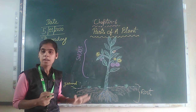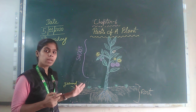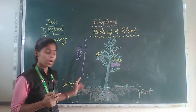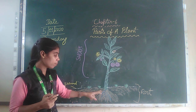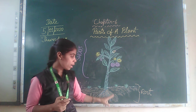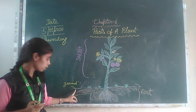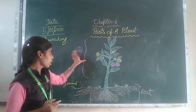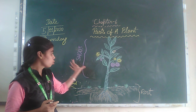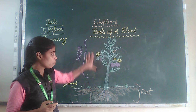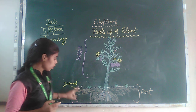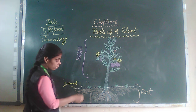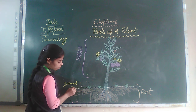The part of the plant that remains above the ground is called the shoot. And the part of the plant that remains under the ground is called the root. This plant has two parts based on their position relative to the ground.